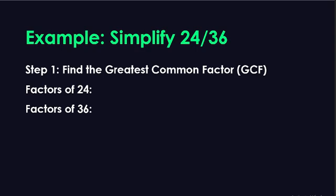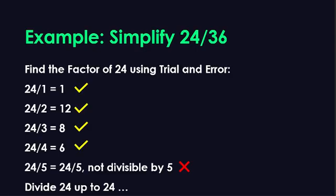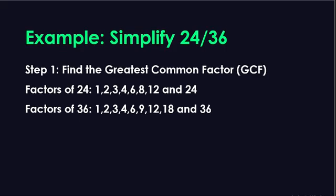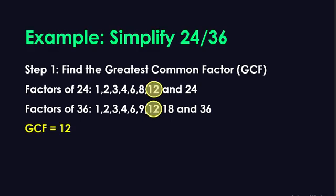Step 1: we need to find the greatest common factor of 24 and 36. To find the factors of a number, we will use trial and error by simply dividing it from 1 to itself. Numbers with a quotient that is a whole number will be its factors. Using this method, the factors of 24 are 1, 2, 3, 4, 6, 8, 12, and 24.